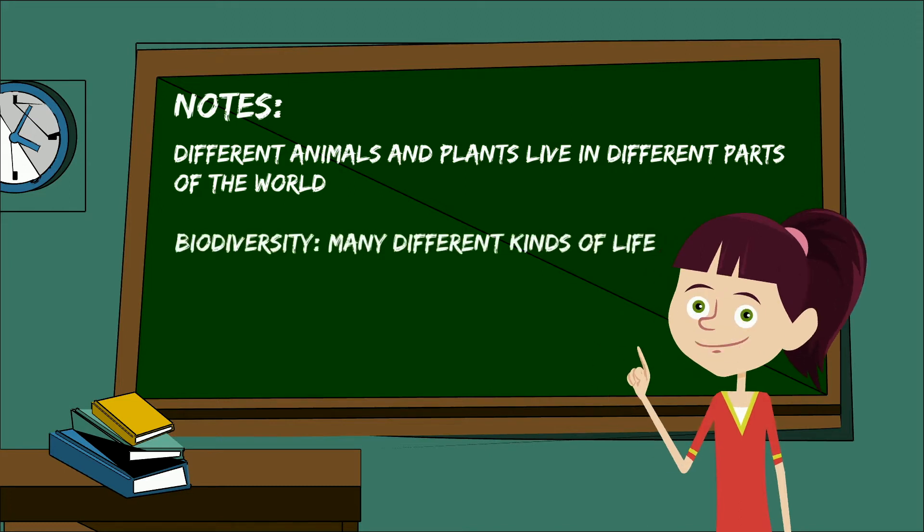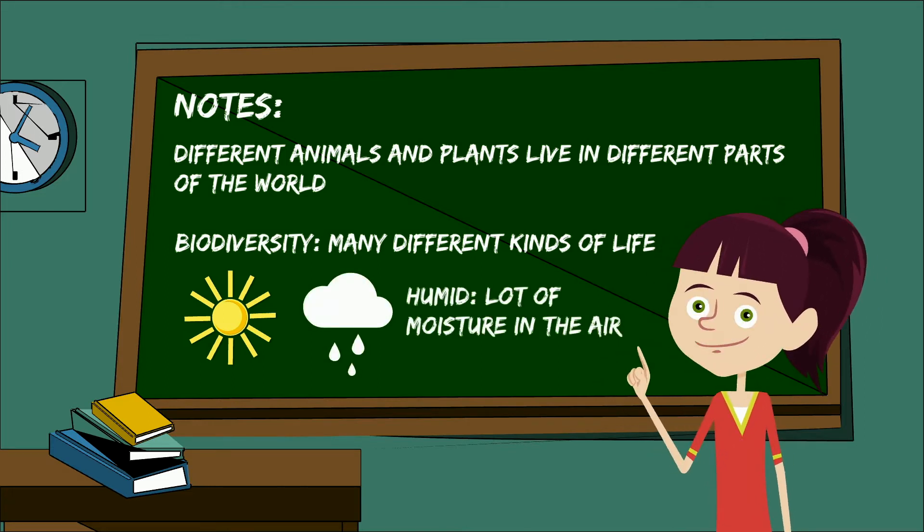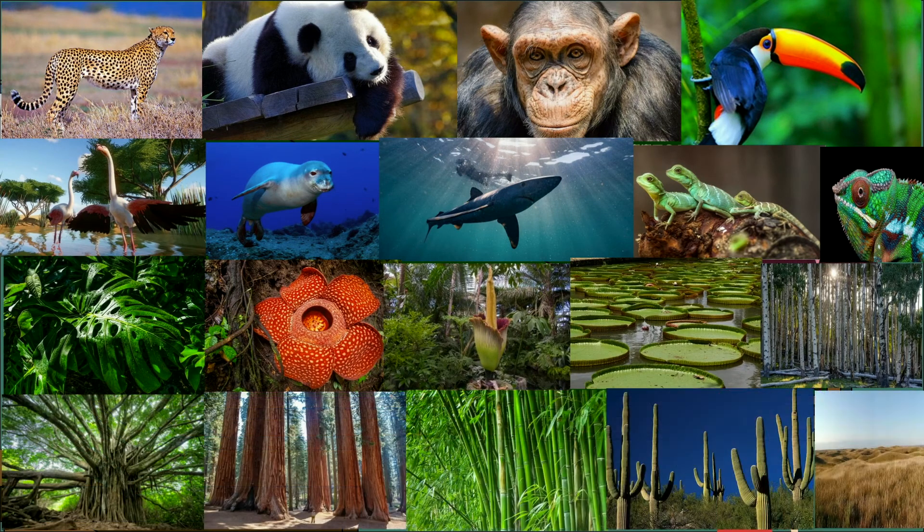In a rainforest where the weather is hot and humid, meaning there's a lot of moisture in the air, there are hundreds of different animals and thousands of different plants.